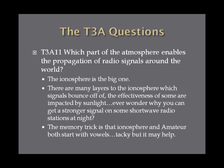Which part of the atmosphere enables the propagation of radio signals around the world? It's the ionosphere. There are D, E, and F layers — we'll cover those in a later lesson. Some layers are affected by sunlight, which affects different bands. A memory trick: ionosphere and amateur both start with vowels. The answer is the ionosphere.